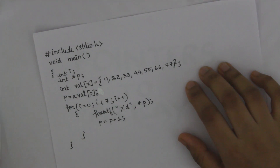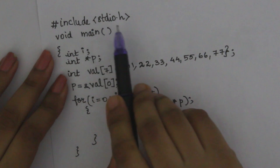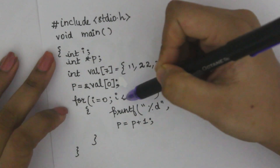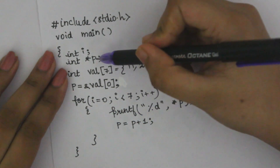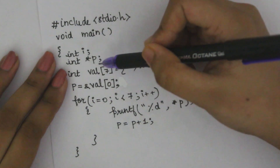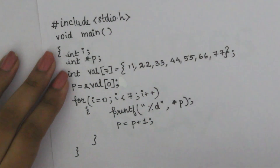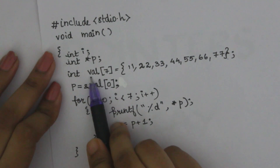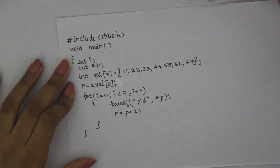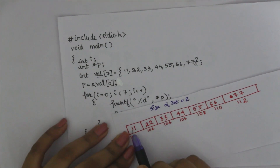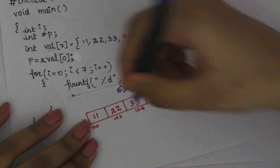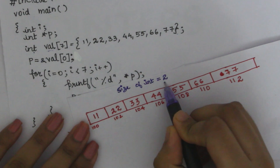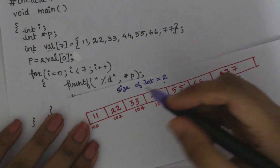Let's start. We'll use hash include stdio, void main, int i, int star p. If you have a variable in the loop, you can declare it in the loop. I'm going to declare a pointer — we will access this pointer. This is our array declaration. The array's name is val. I will add values to that array. The integer size is 2.